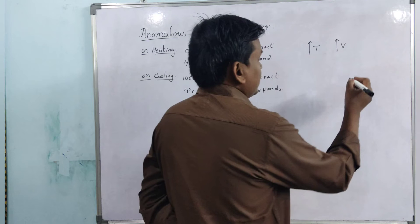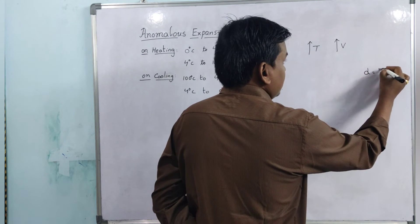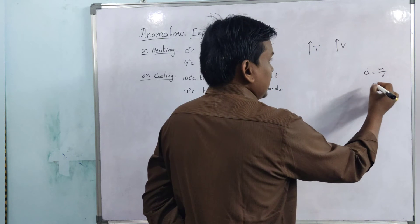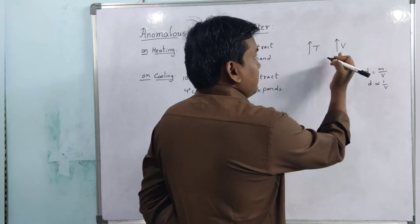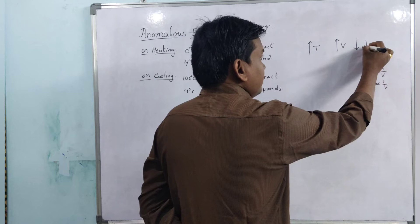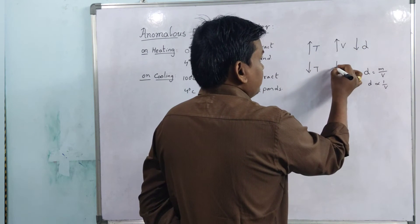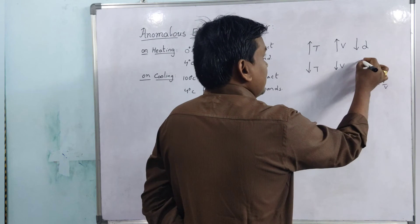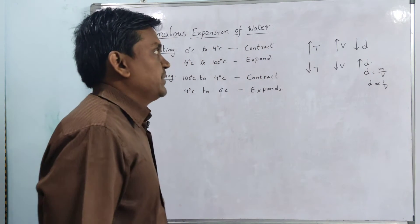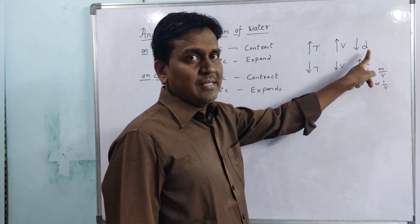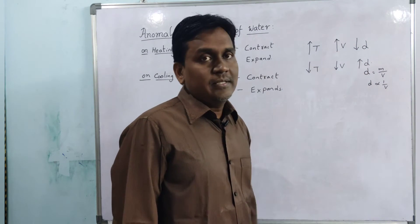In general, if temperature increases, volume also will increase. Now what happens to density? We know that density D equals mass divided by volume, which means density is inversely proportional to volume. So if volume increases, density will decrease. Increasing temperature increases volume and decreases density; decreasing temperature decreases volume and increases density.